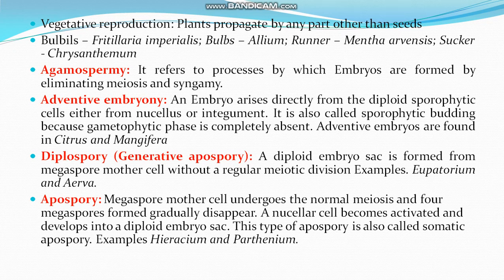In diplospory, a diploid embryo sac is formed from the megaspore mother cell without regular meiotic division — examples: Eupatorium and Taraxacum. In apospory, the megaspore mother cell undergoes normal meiosis and the four megaspores formed gradually disappear; a nucellar cell becomes activated and develops into a diploid embryo sac. This type is called somatic apospory — examples: Hieracium and Parthenium.